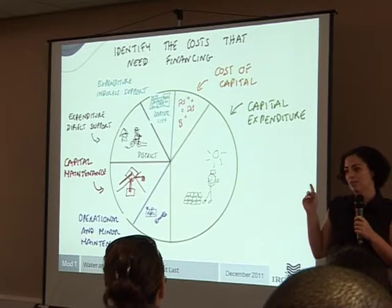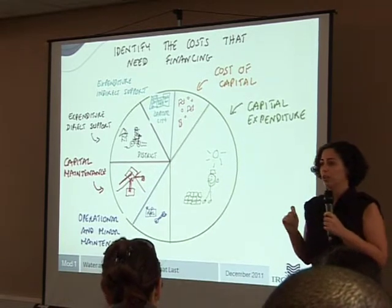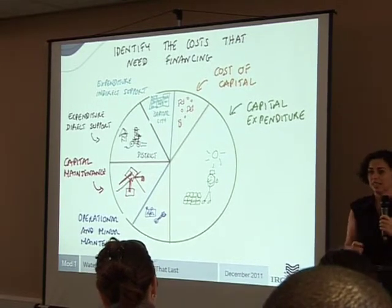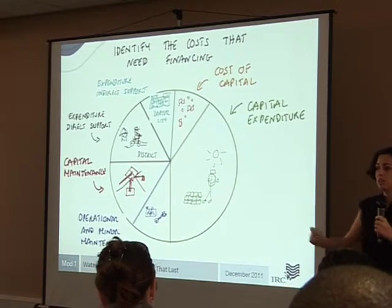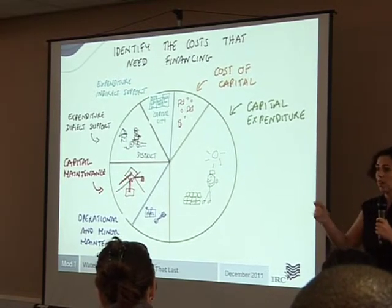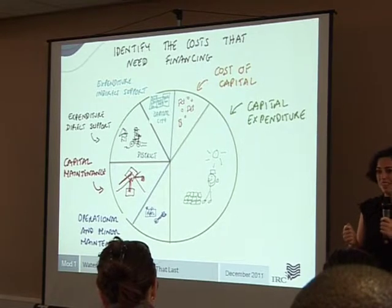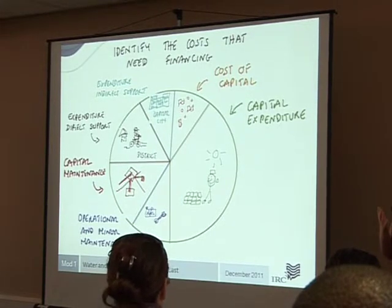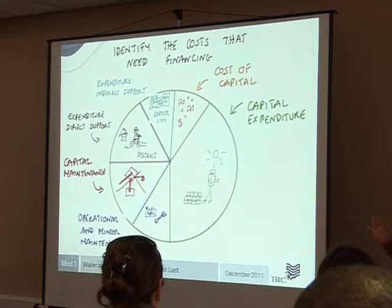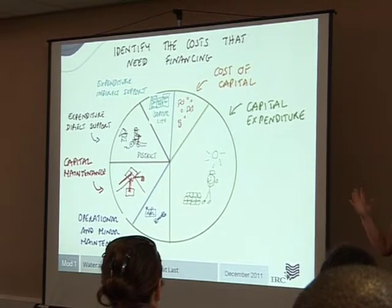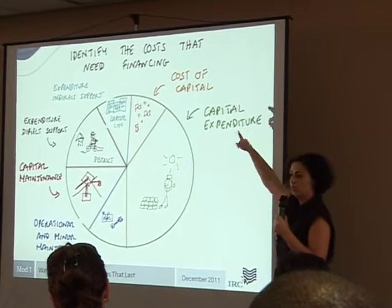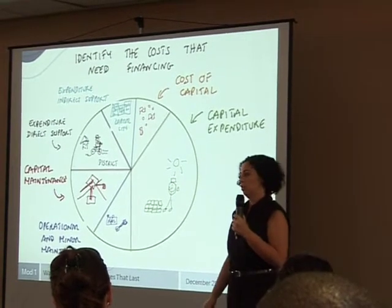Cost of capital also includes return on equity for private providers — usually called profit, but technically it's return on equity. Instead of investing in a bank account, they took the risk of investing in a water system and they'd like some return. Profit is usually considered a bad word in this sector, but without returns on equity, you don't have investments from private operators. You can discuss what an adequate level of return on equity looks like, but that's a separate matter.